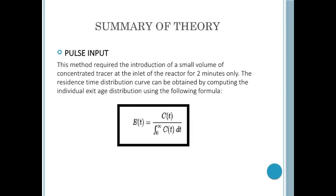For pulse input, this method required the introduction of a small volume of concentrated tracer at the inlet of the reactor for 2 minutes only. The residence time distribution curve can be obtained by computing the individual exit age distribution using the following formula: E as a function of t is equivalent to C as a function of t divided by the integration of limit from 0 to infinity, C as a function of t dt.